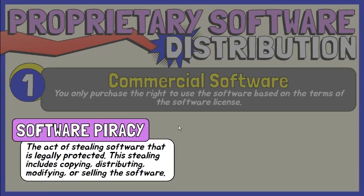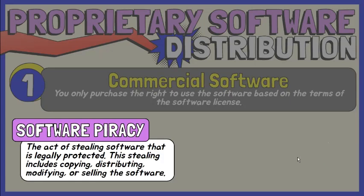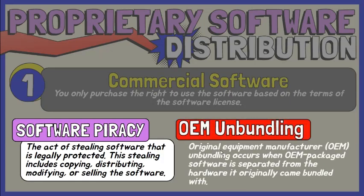The following are some of the pirating techniques. Softlifting occurs when users share their software with other users who are not authorized to have access. It occurs when a person does legitimately purchase a single-user license software but installs it onto multiple computers, which is a violation of the licensing agreement. Original equipment manufacture and bundling occurs when OEM package software is separated from the hardware it originally came bundled with, at the OEM or retail level of sale.